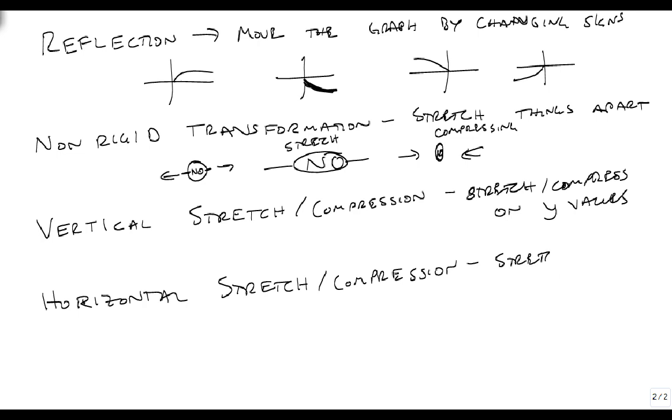The horizontal is when we stretch or compress on the x values. So this particular example I showed right here, this is a horizontal. A vertical would be taking that 'no' and pulling it up or down so it becomes really tall 'no.'